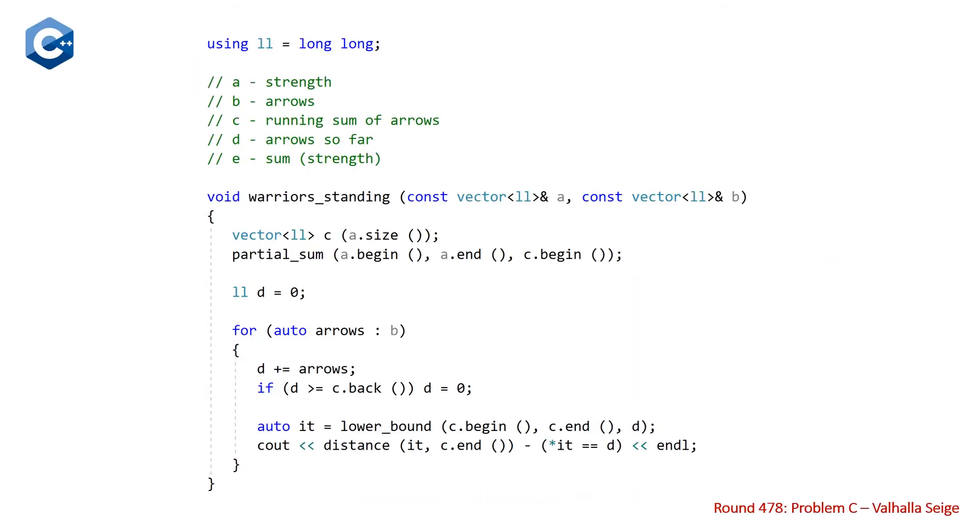Here we have just a small function. And we have some comments here explaining what each of the variables names. So we have our function warrior_standing, which takes two vectors of long longs. ll is just a type alias for long long, so we don't have to type it over and over again. And our first vector a represents the strengths of each of the warriors. So that's going to be dimension n, our first number in our input. And our vector b is going to be the number of arrows that are unleashed on each turn. So this will be size q.